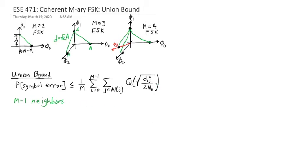So all these distances are going to be the same. So all these Q function terms are going to be the same. So when we write this expression again, we're going to have one over M.